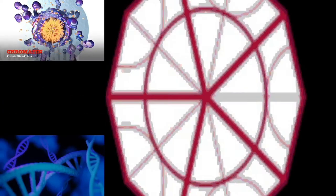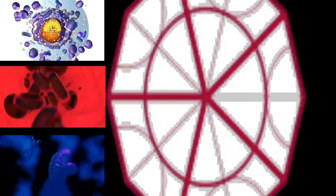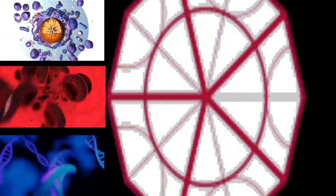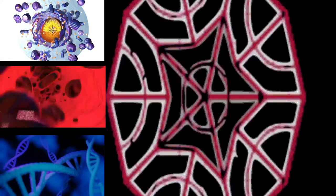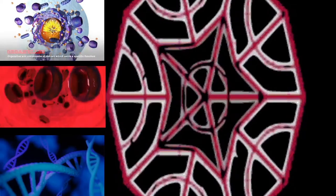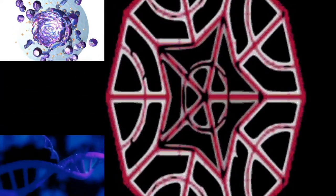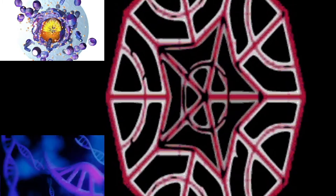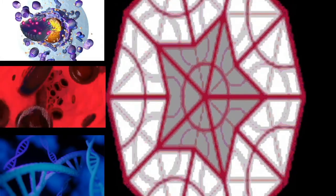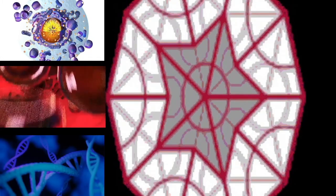The last common ancestor of all eukaryotes is believed to have been a phagotrophic protist with a nucleus, at least one centriole and cilium, facultatively aerobic mitochondria, sex, meiosis, and syngamy, a dormant cyst with a cell wall of chitin and/or cellulose, and peroxisomes.